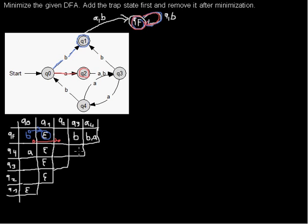For Q3 and Q4: with A they only switch places. With Q3 and a B arc I go to Q1, and from Q4 with B I go to Q0. Looking at Q1 and Q0, I already wrote epsilon there. So with a B transition I have the proof that Q3 and Q4 are not equivalent.